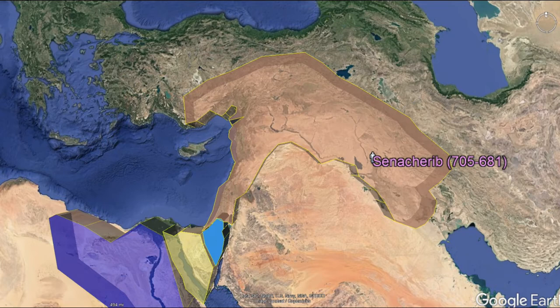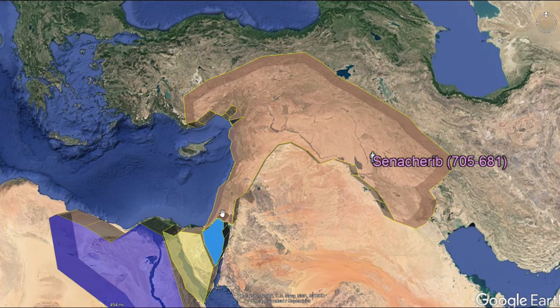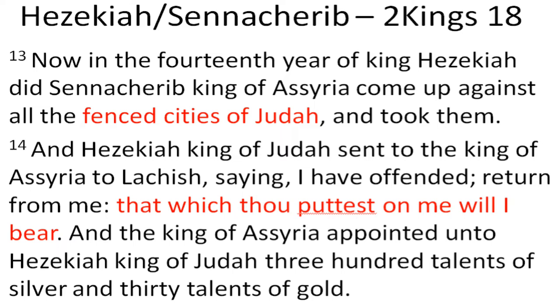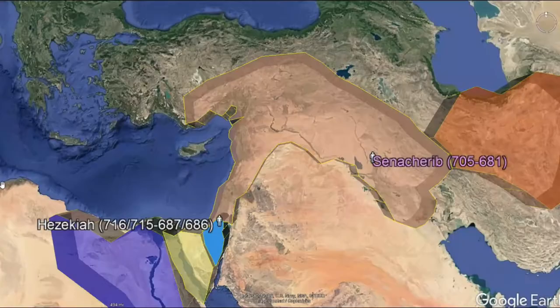In 2 Kings we see that Shalmaneser, king of Assyria, deported a bunch of the northern tribes — specifically Samaria, which is directly north of Judah. The northern kingdom fell, and then Samaria. Now Sennacherib is knocking on the door of Hezekiah. Fast forward just a little bit in years: in the fourteenth year of king Hezekiah, Sennacherib, king of Assyria, came up against all the fortified cities of Judah and took them.